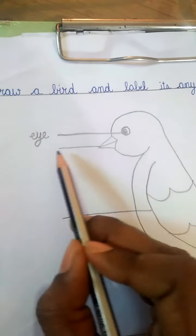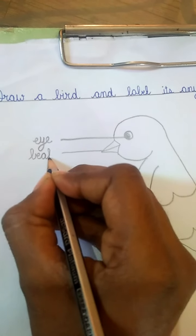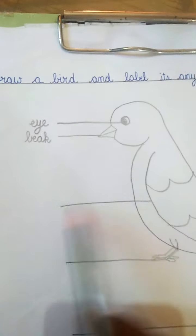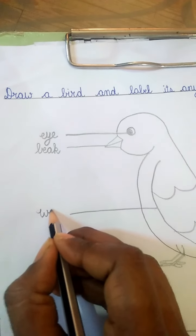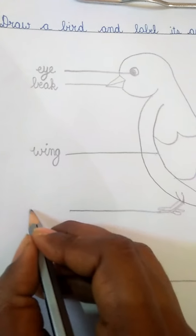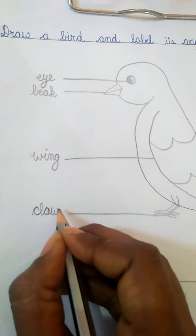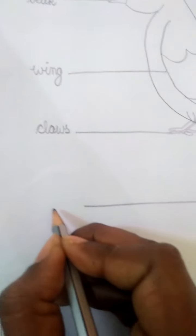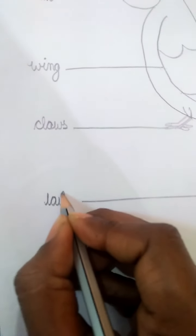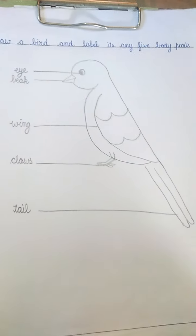The next one is the beak, B-E-A-K. Next one is the wing, W-I-N-G. Here, this is the claw, C-L-A-W. Yes, claws. And the last one, this is the tail, T-A-I-L.